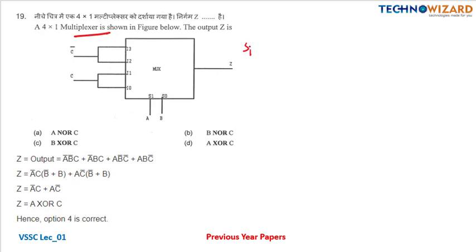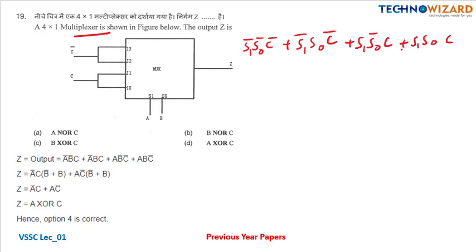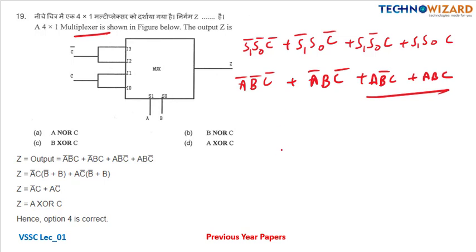Question number nineteen: multiplexer output. Output equals S1-bar S0-bar times I0 (C-bar) plus S1-bar S0 times I1 (C-bar) plus S1 S0-bar times I2 (C) plus S1 S0 times I3 (C). Simplifying: A-bar B-bar C-bar plus A-bar B C-bar plus A B-bar C plus A B C. Making a K-map gives A XOR C as the correct answer. Option D.